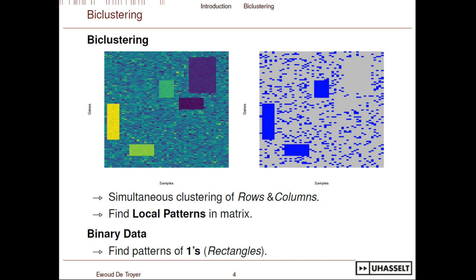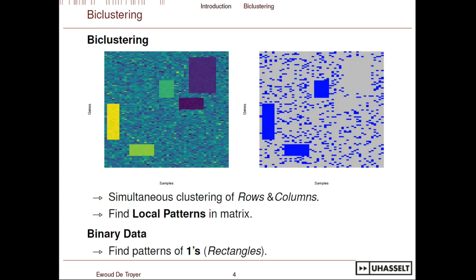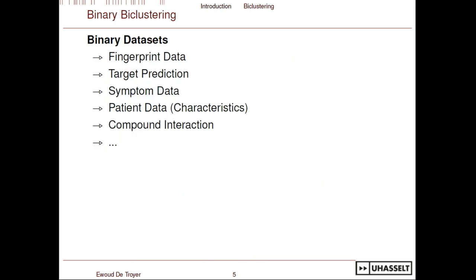Bi-clustering is actually very simple — you're trying to cluster the rows and the columns of your data simultaneously. You're trying to find these local patterns in your data, like rectangles. For binary data it's even simpler, because you're really just trying to find rectangles of ones in your 0-1 datasets. Applications include fingerprint data, target prediction data, and patient data, so long as it's binary 0-1.